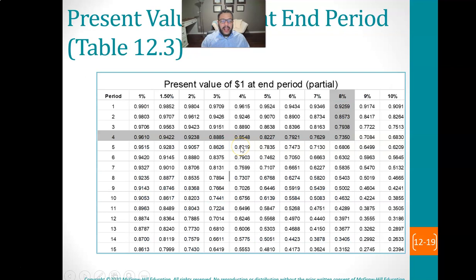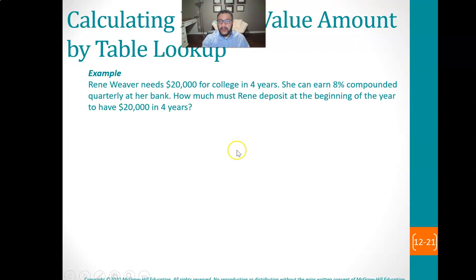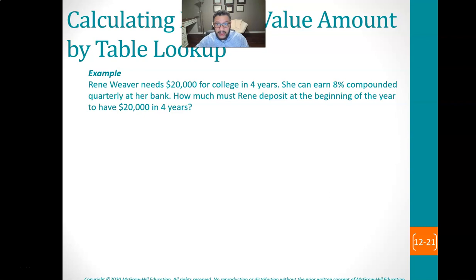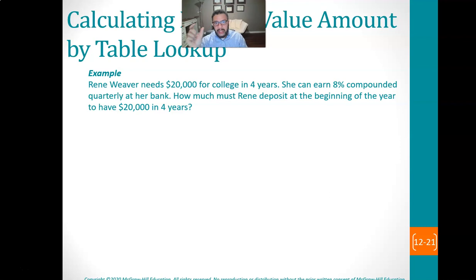Now we want to calculate present value — and it's the same process. Find N and R, find the table lookup factor, and multiply it times the thing you know. This time, what you know is the future amount, because we're trying to calculate the present value. The present value table factors are mostly less than 1, because multiplying by them makes the number smaller — if something grew due to interest over time, you started with a smaller number.